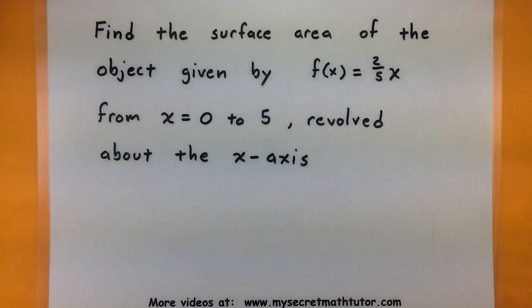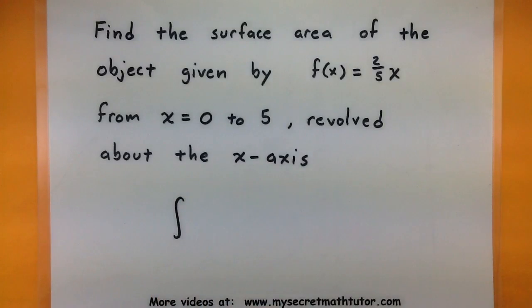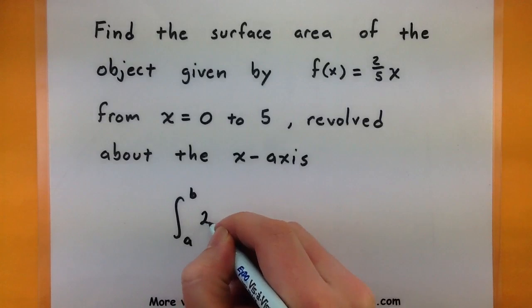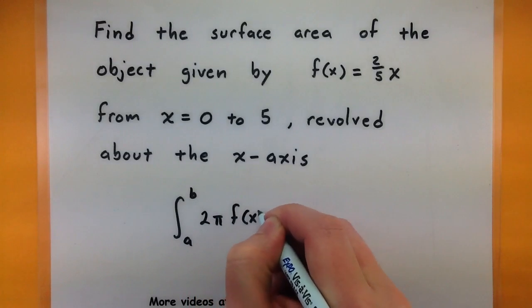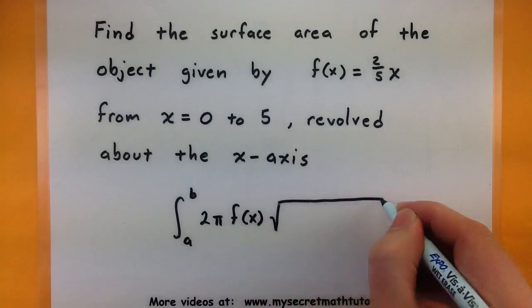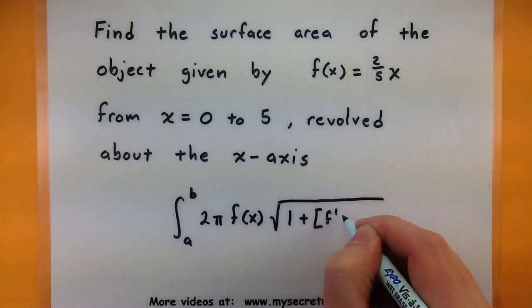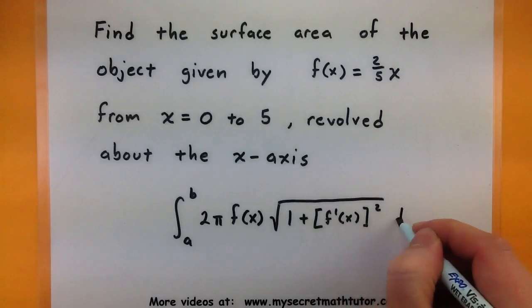In case you don't remember what that formula is, let's go ahead and start by writing it down. We're going to look at our integral from a to b of 2π multiplied by the function, and all this will be multiplied by the square root of 1 plus the derivative of our function squared, dx.